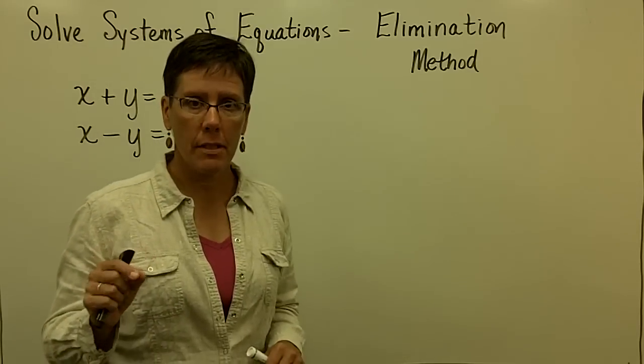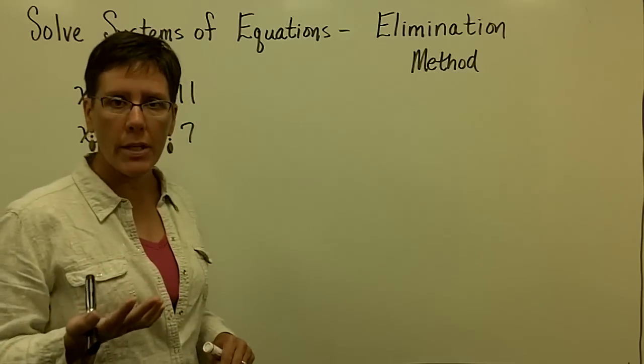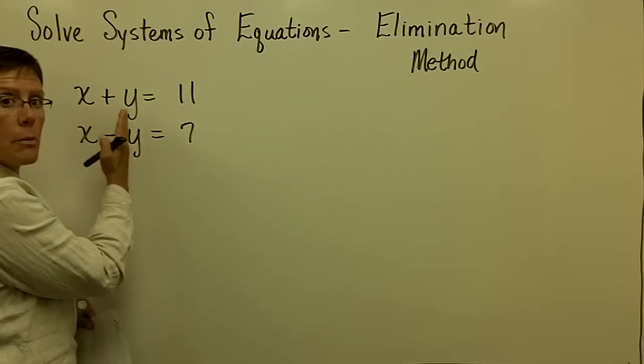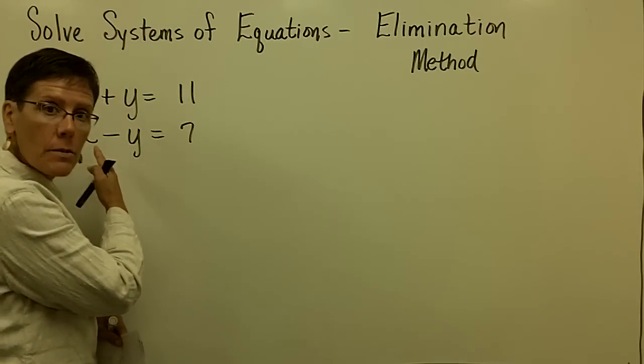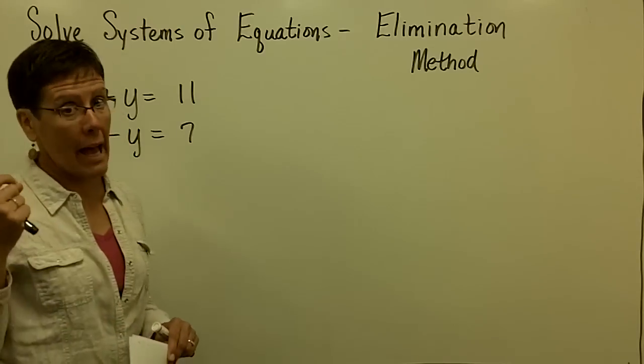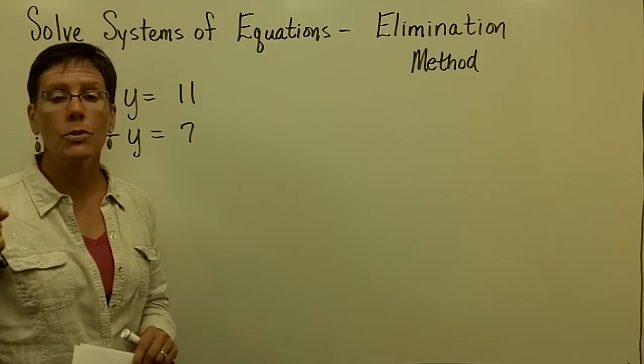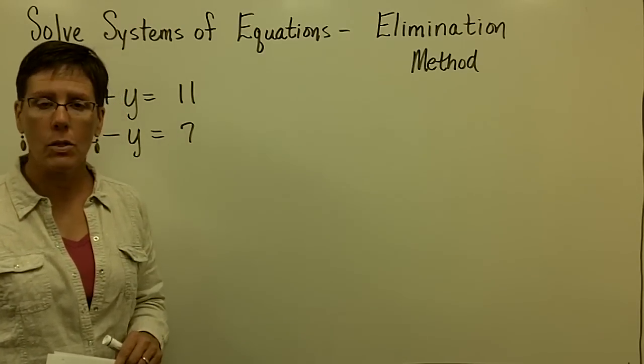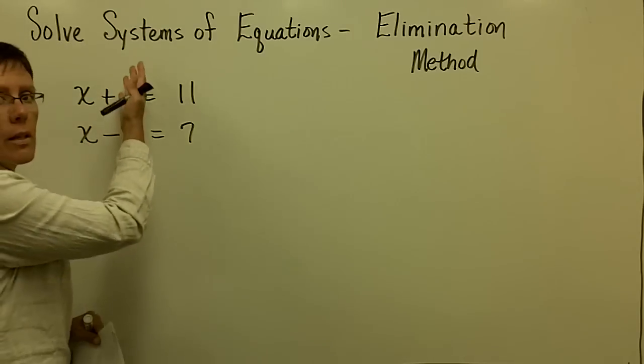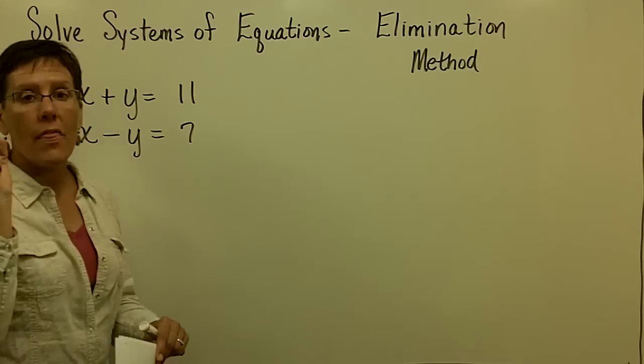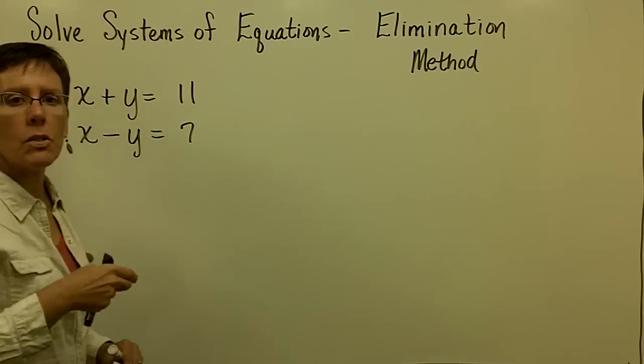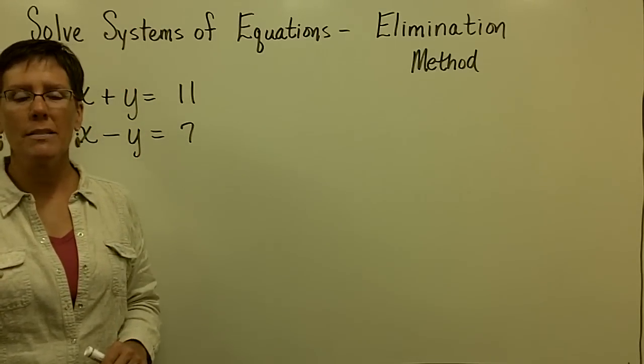What's required of the elimination method is that you get the equations in standard form. Standard form means that the variables are on one side of the equation and the constants are on the other side. I would typically also say that you should line the variables up in alphabetical order. Since we're working with two letters, put the x's in the first column and the y's in the second column. They must be lined up in order to successfully use this process.